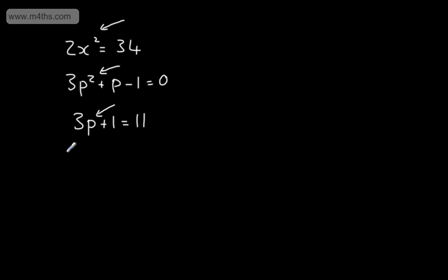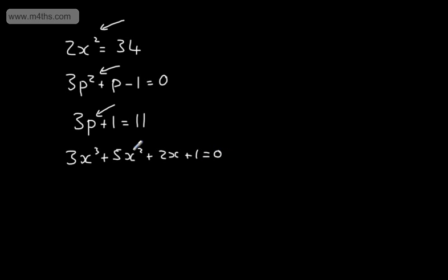If, for example, I had 3x cubed plus 5x squared plus 2x plus 1 was equal to 0, this would be a cubic equation as the highest power of the unknown, which is x, is to the power of 3.